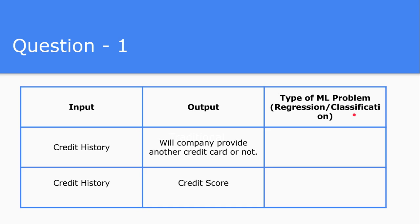We have seen in our earlier lectures on different kinds of machine learning systems — supervised learning has regression and classification. We have seen that if the output is a discrete step or a finite number of discrete steps — in this case it's binary, just giving a credit card or not giving a credit card — this kind of problem lies inside the classification problem.